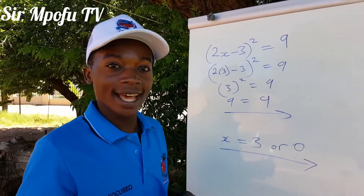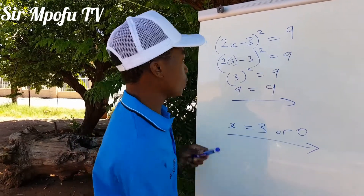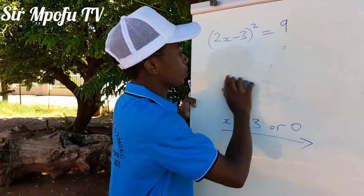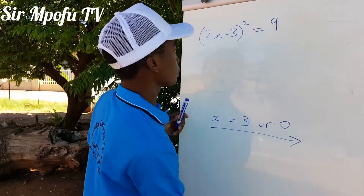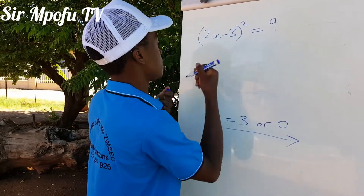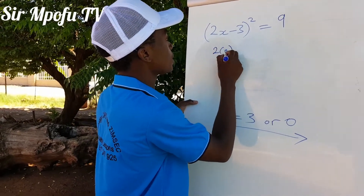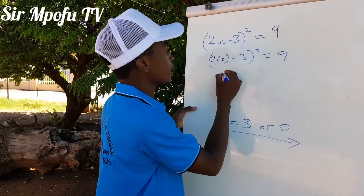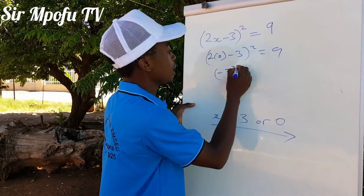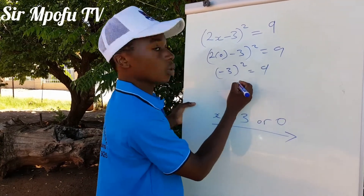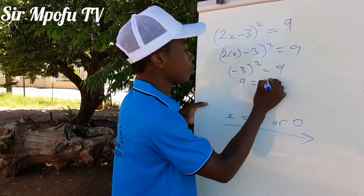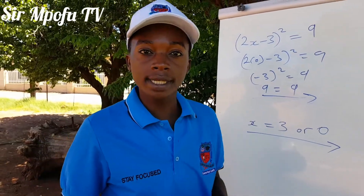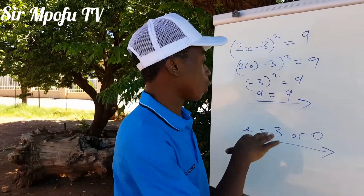Now let's use the other value to prove. When you're using x equals 0, it's going to be 2 times 0 minus 3 squared, and our answer must be 9. 2 times 0 is 0, minus 3 is minus 3 squared, equals 9. So minus 3 squared is 9, and 9 equals 9. I just wanted to show you that these solutions are both correct.